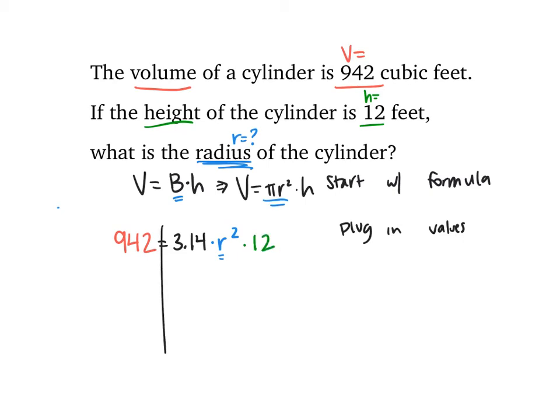I eventually want to get r by itself. I'm going to get the π out of the way, so dividing both sides by 3.14. So 942 divided by 3.14 gets me 300, and that's equal to r² times 12. Next, I'd want to get rid of that 12 by dividing both sides by 12, and that gets me 25 equals r².